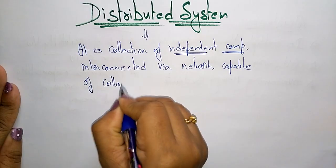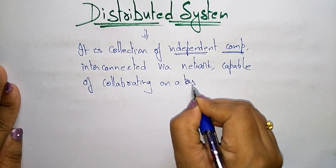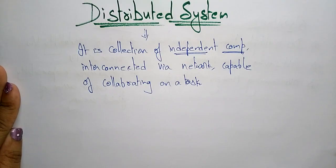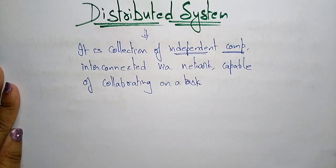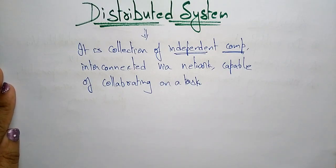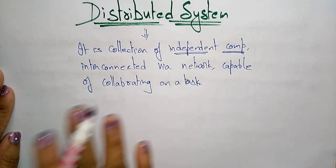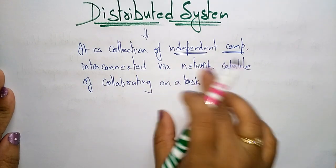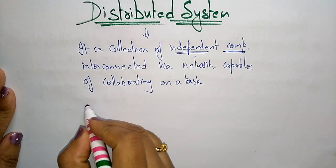So a distributed system is a collection of independent computers interconnected via network, capable of collaborating on a task. In a parallel system, we take multiple CPUs or processors sharing a single shared memory — one system depends upon another, so that is tightly coupled. Whereas in a distributed system, we take independent computers interconnected via network, capable of collaborating on a single task.